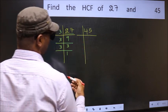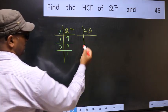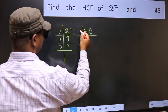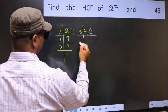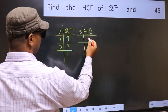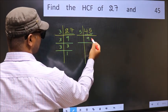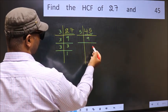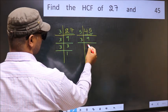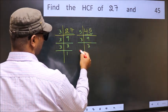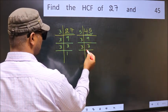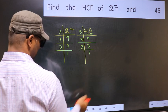Now the other number. The last digit is 5, so take 5. When do we get 45 in the 5 table? 5 nines — 45. Now 9 is 3 threes — 9. 3 is a prime number, so 3 ones — 3.